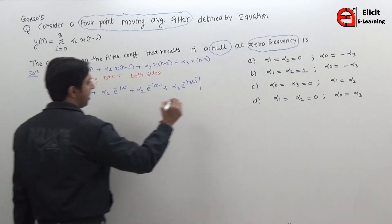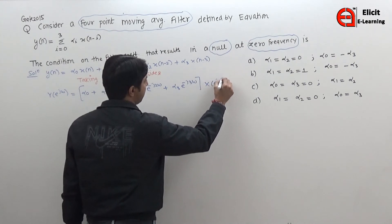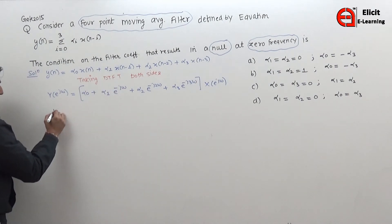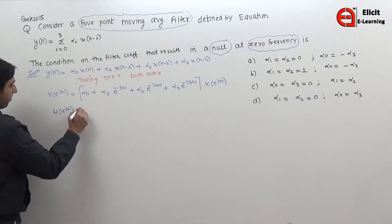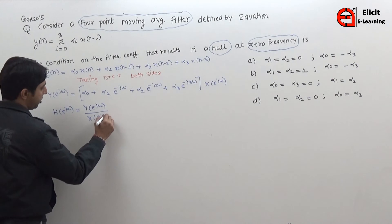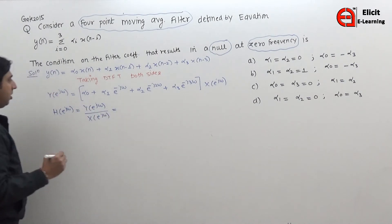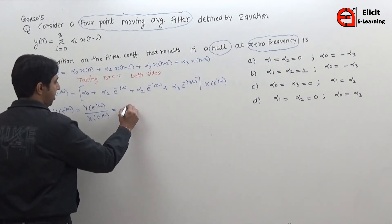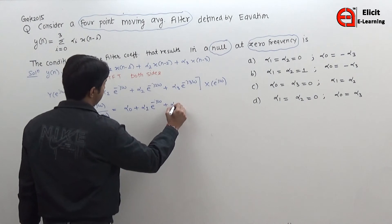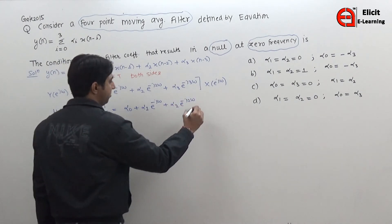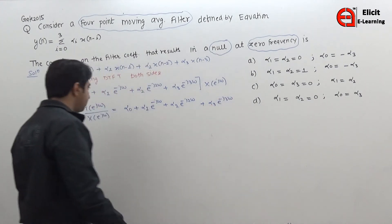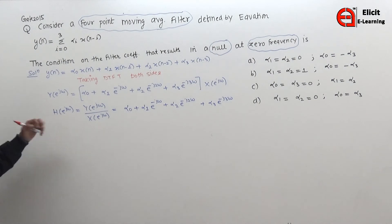Multiplied into X(e^(jω)). Dividing both sides by X(e^(jω)), the transfer function H(e^(jω)) equals Y(e^(jω)) divided by X(e^(jω)), which gives: H(e^(jω)) = α₀ + α₁·e^(−jω) + α₂·e^(−j2ω) + α₃·e^(−j3ω). This is our transfer function equation.